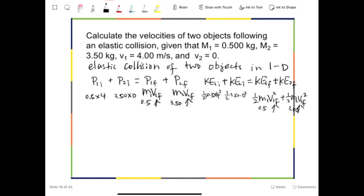Usually, we can do the substitution of variables. So for example, in the first equation, we know that it is 0.5 times 4, which is 2, plus 0 equals 0.5v₁f plus 3.5v₂f. We can express v₁f in terms of v₂f, which is v₁f equals 4 minus 7v₂f.